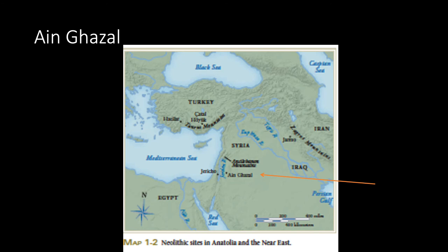Another Neolithic settlement we study in the Middle East is Ain Ghazal. Ain Ghazal wasn't quite as old as Jericho — it was settled in the early 7,000s and lasted about 2,000 years. The community had specialized skill sets just like Jericho: they had architects, plasterers, painters, and sculptors. They liked their houses in irregular shapes and they painted the walls of their houses red.